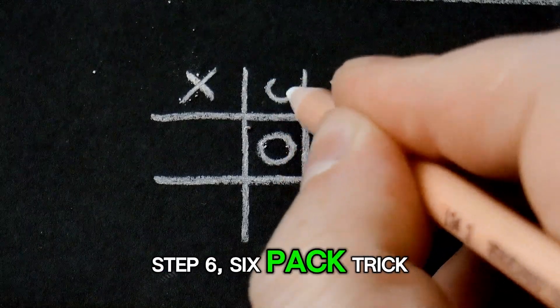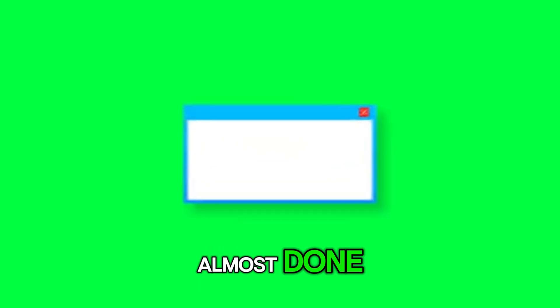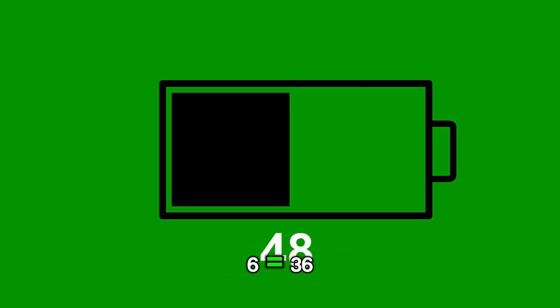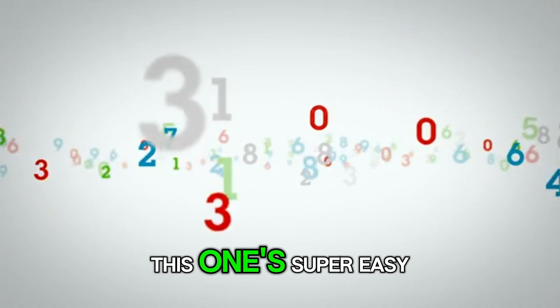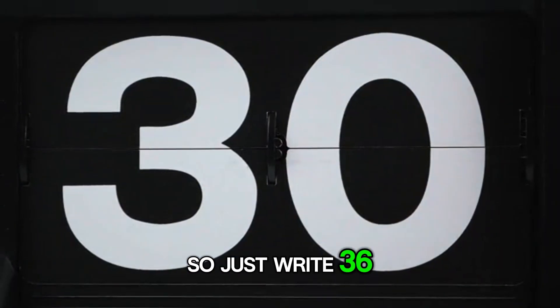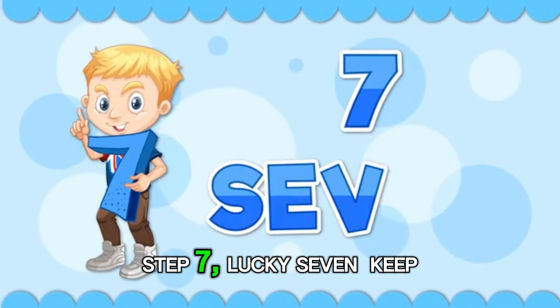Step 6. 6 pack trick. Almost done. Now we have 6 times 6 equals 36. This one's super easy. Both numbers are 6. So just write 36. Nice work.